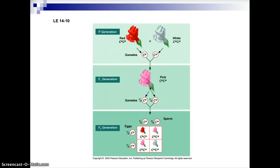If you cross two F1 generation flowers, you have heterozygous flowers: C-R, C-W crossed with C-R, C-W. You'd get one red flower with C-R, C-R genotype, two pink flowers with C-R, C-W genotype, and one white flower with C-W, C-W genotype. You could also illustrate this using just capital R for red, lowercase r for white, and capital R, lowercase r for pink, depending on the level of genetics.